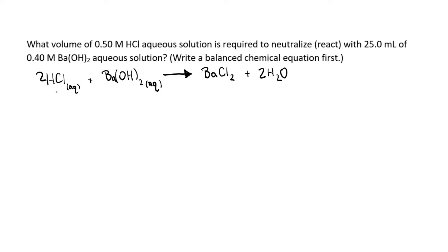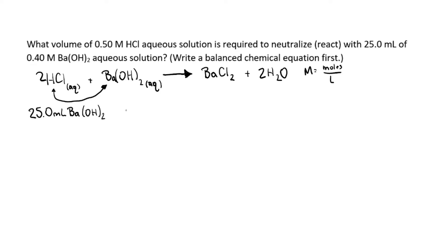We want to figure out how many milliliters of hydrochloric acid we need to neutralize this barium hydroxide. Remember: molarity equals moles per liter. This is a dimensional analysis question. Start with 25 milliliters of barium hydroxide and convert to liters, since molarity is in liters. For every one milliliter, we get 10 to the negative three liters.